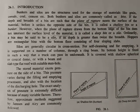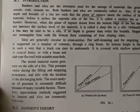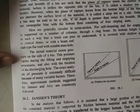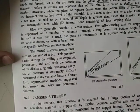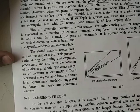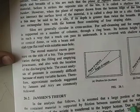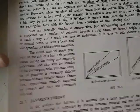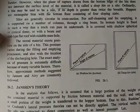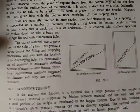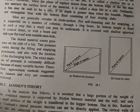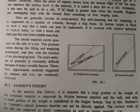For silos, two theories have been introduced: Jensen's theory and Aries' theory. In Jensen's theory, it is assumed that a large portion of the weight of the contained material is supported by friction between the material and the wall, and only a small portion of the weight is transferred to the bottom.